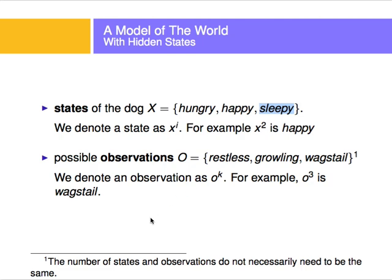We denote an observation as O superscript k. For example, if k is 3, then the observation is wagging the tail, abbreviated as 'wag's tail.' So these are my states and my observations in my model — I'm trying to make a model of the world.